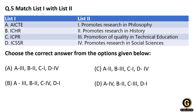They have given us two lists — one with institute names and the other with their functions. This is a straightforward matching question. All India Council for Technical Education looks after technical education. Indian Council for Historical Research looks after research in history. Indian Council for Philosophical Research promotes research in philosophy. Indian Council for Social Science Research promotes research in social science. The correct answer is A.